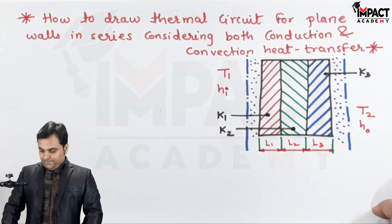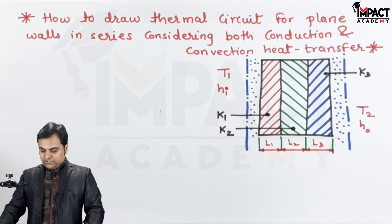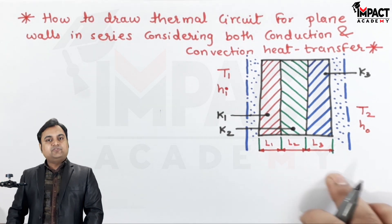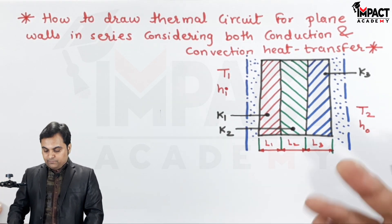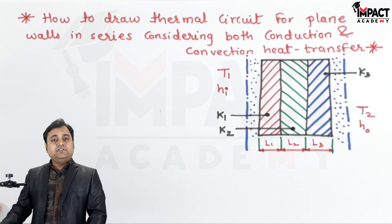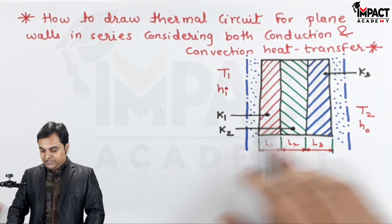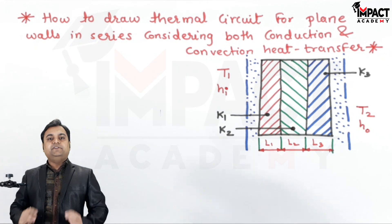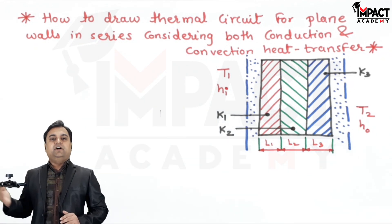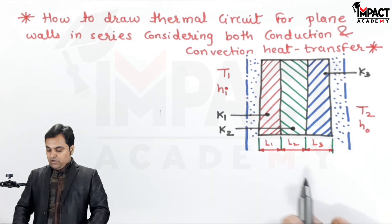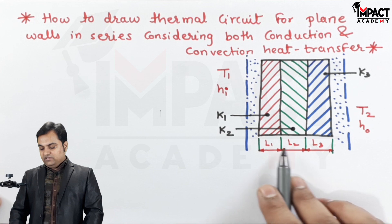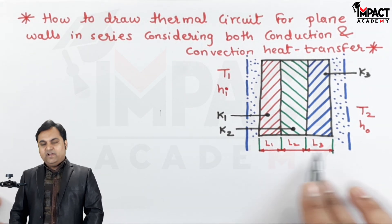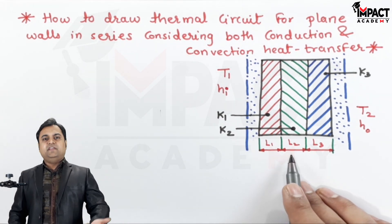Here is the diagram in which there is a composite wall made up of three different materials having three different thermal conductivities: k1, k2, and k3. These walls are connected in series, one after another, and they have lengths l1, l2, and l3. These values can be the same or different.